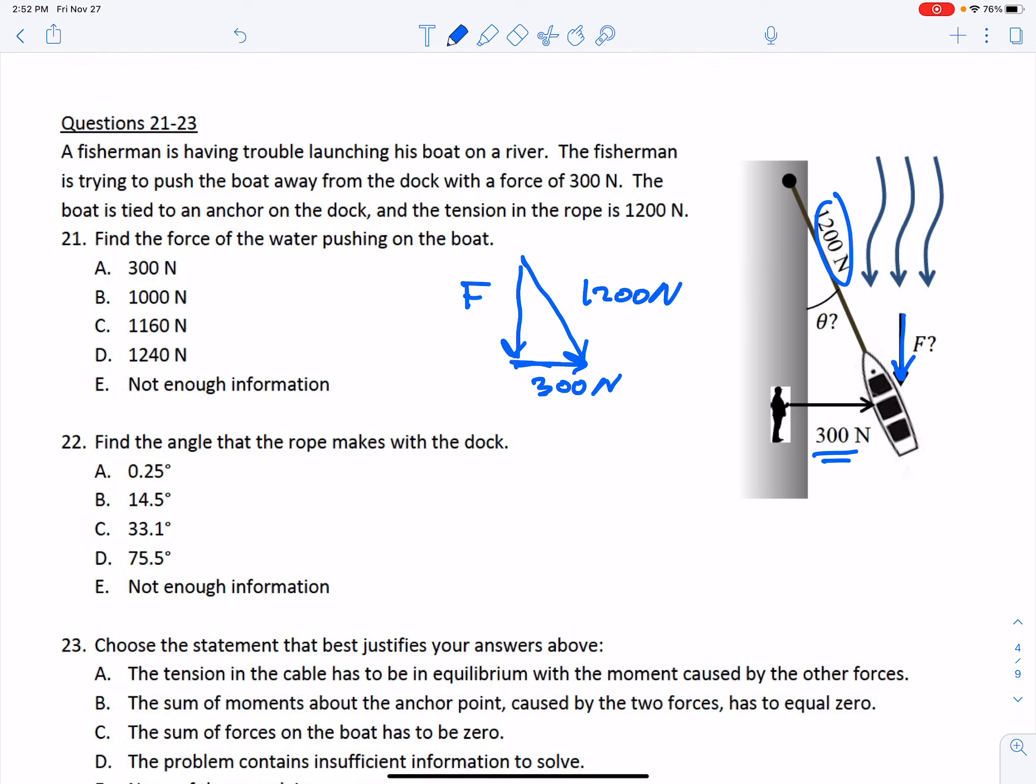Okay, so this is a right triangle. You can do this in a couple of ways: you can use trig or you can use the Pythagorean theorem and get the force would be the square root of 1200 squared minus 300 squared. And so when you calculate that, the answer is 1160.